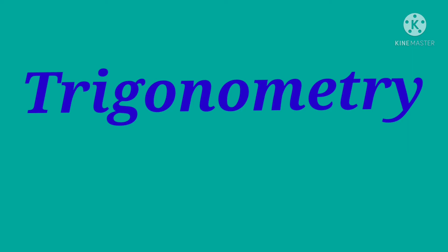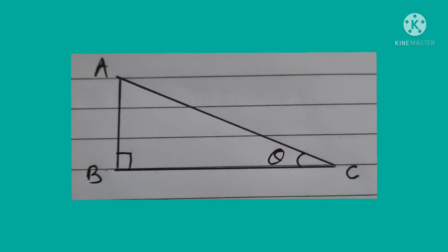What is meant by trigonometry? Trigonometry is a branch of mathematics. The word trigonometry is made from three Latin words: tri means three, gono means sides of the triangle, and metron means to measure — that is, the length of the sides of the triangle. That means trigonometry is nothing but the study of the length of three sides of the right-angled triangle.